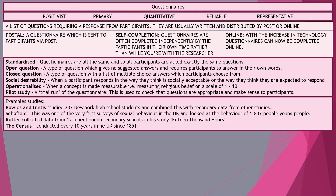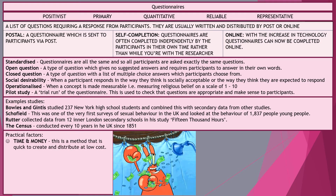Similar issues arose with the Hite Report, which received a very low response rate due to testing sexual attitudes. Rutter studied 12 inner London area schools as part of the 15,000 Hours study — an interpretivist study using a positivist method. Last but not least, the Census is conducted every 10 years in the UK since 1851, with the next one due in 2021.